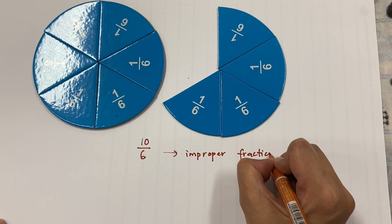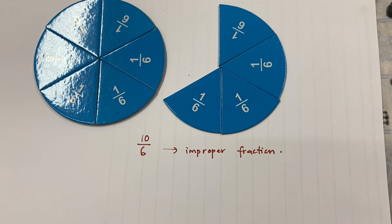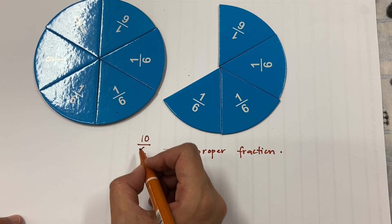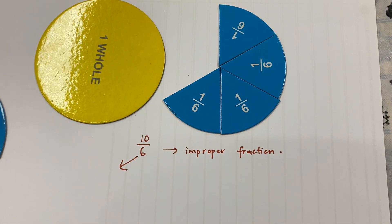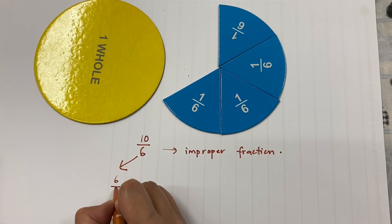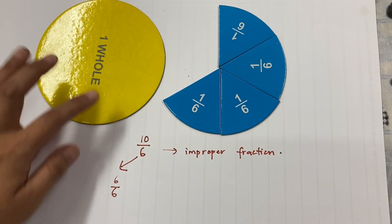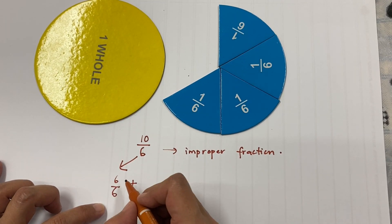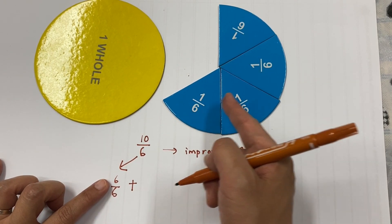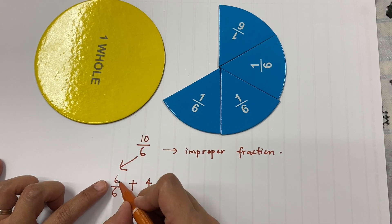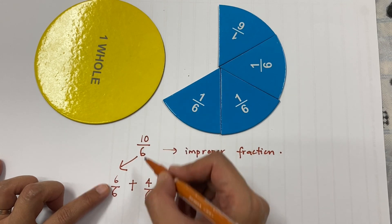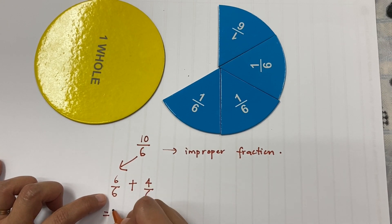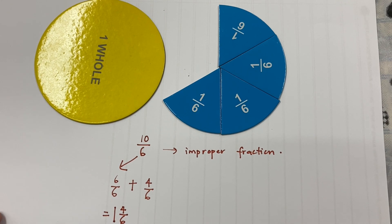We are going to change this improper fraction to a mixed number. So 10 out of 6 is broken up into two parts. As you can see, it's 6 out of 6 — that's one whole — plus the extra 1, 2, 3, 4 out of 6. So 6 plus 4 gives you 10. So 6 out of 6 is 1, plus 4 out of 6, is 1 whole and 4 out of 6.